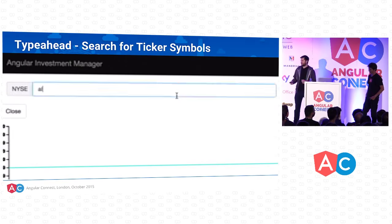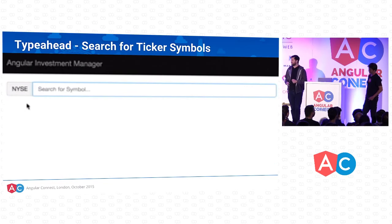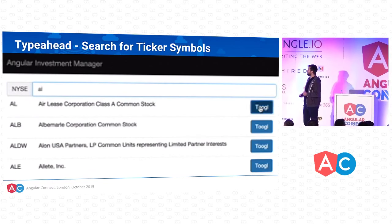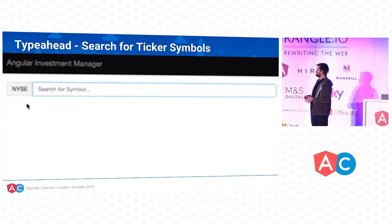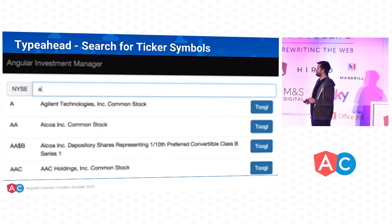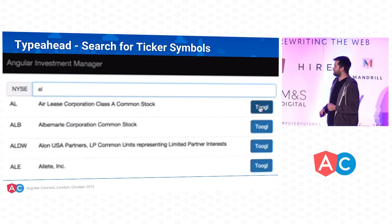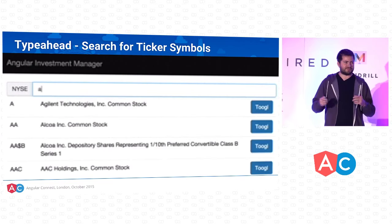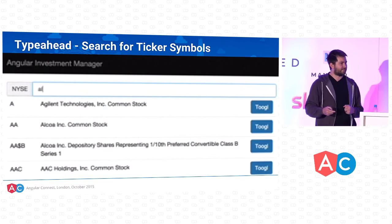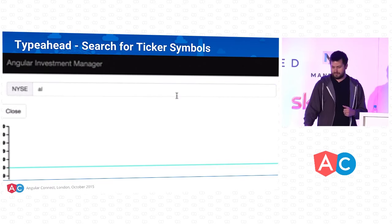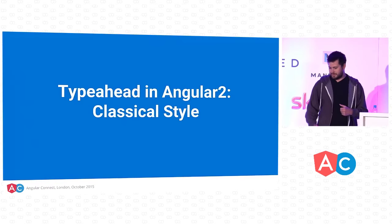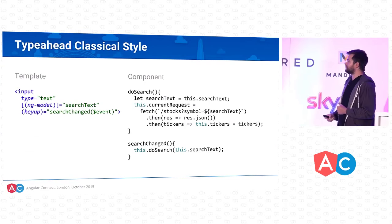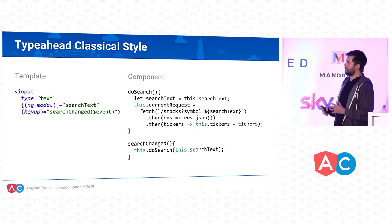The first thing we want to do is find companies we want to track. We have this classic type-ahead component where you can start typing in the name of a symbol, suggestions show up as you type, and you can click 'Tougal' — which is just our app's way of watching a stock — it has to have a cool name.